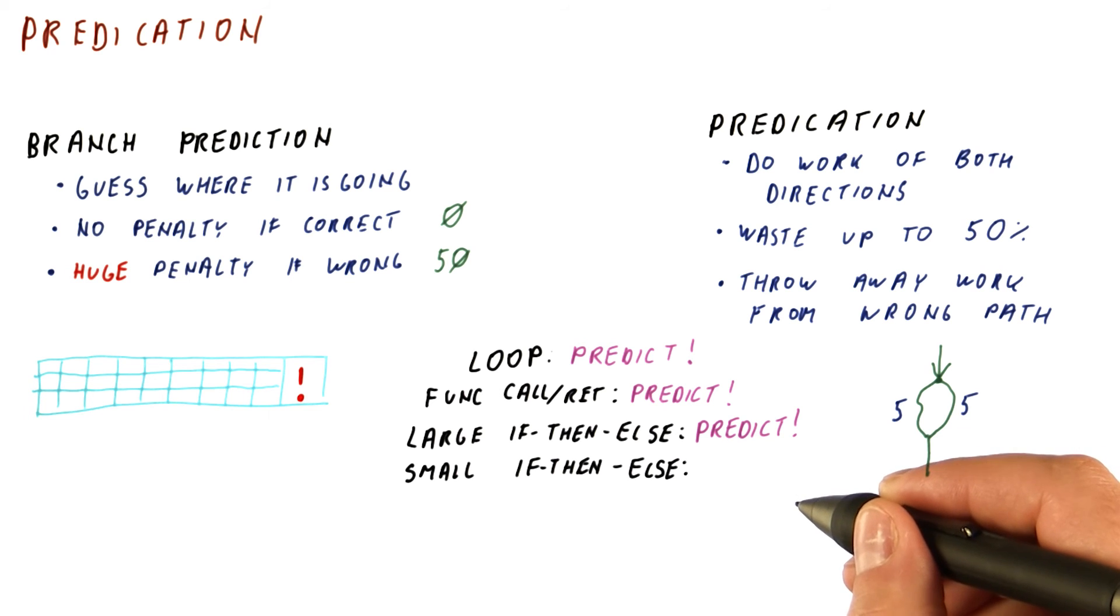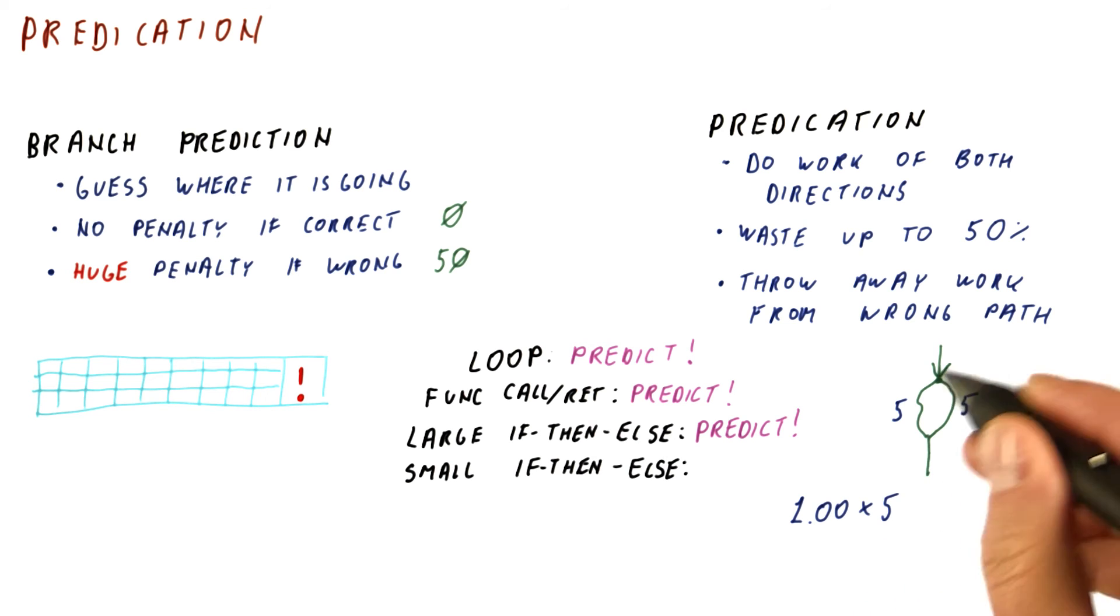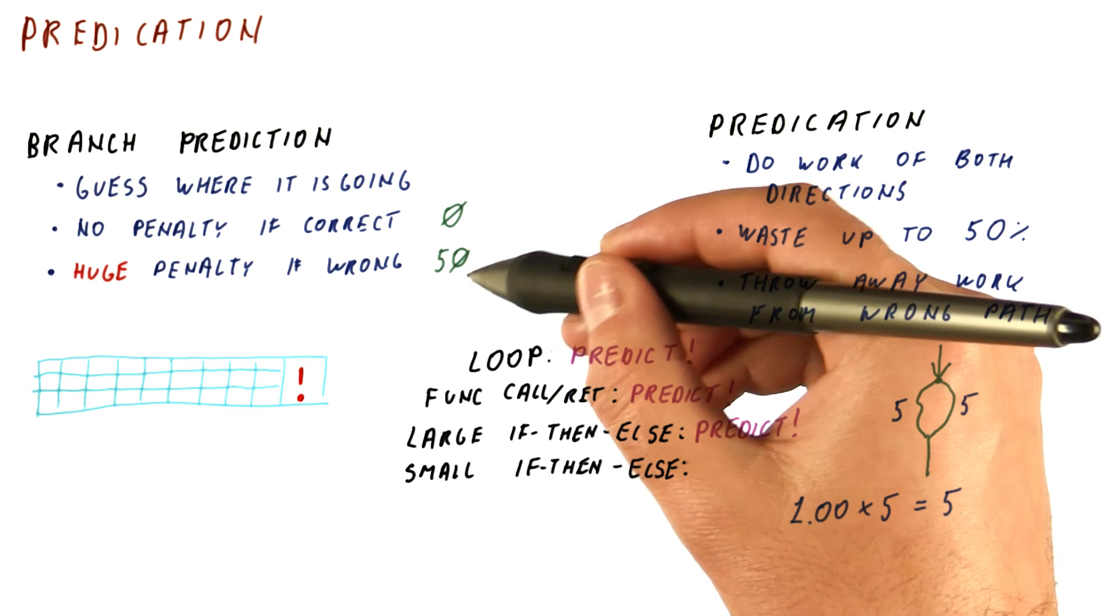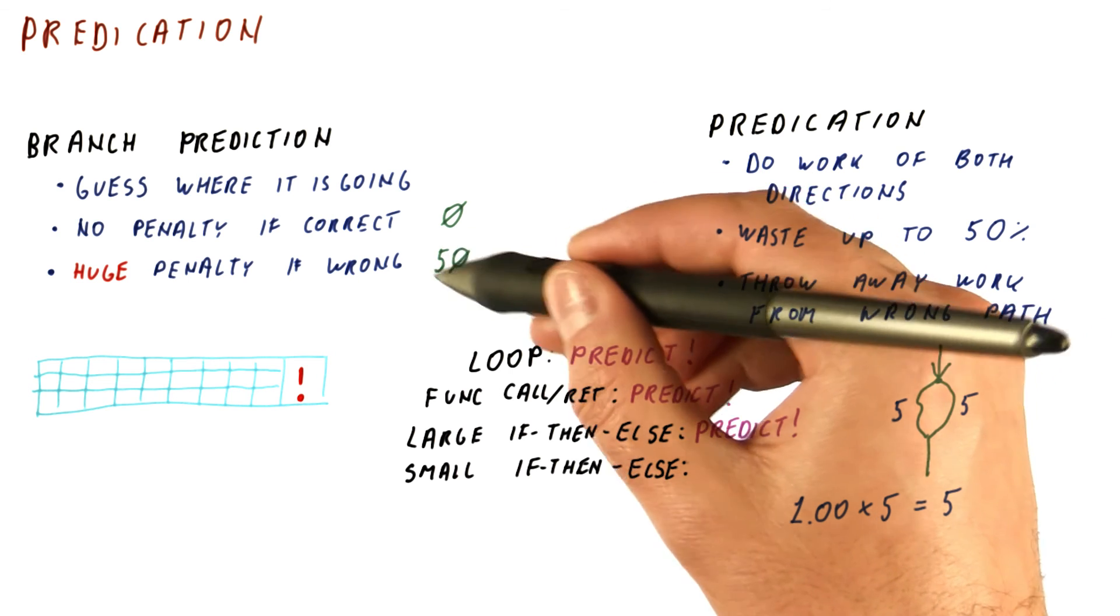So our comparison is that 100% of the time, we waste five instructions with predication. So we end up with five on average per instance of this. Whereas here, our branch prediction rate determines how often we waste this 50.